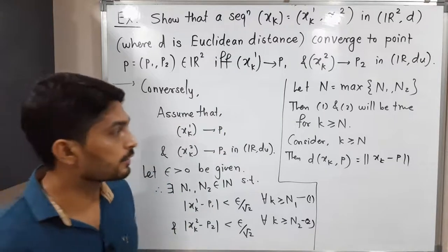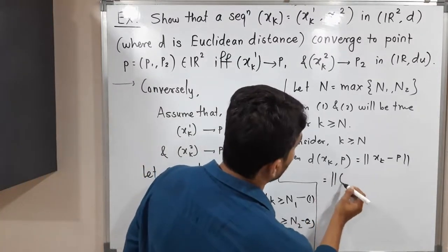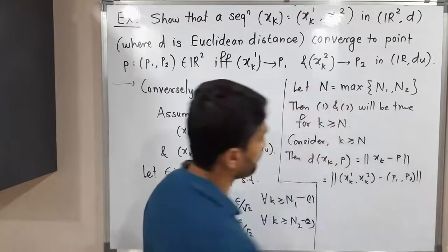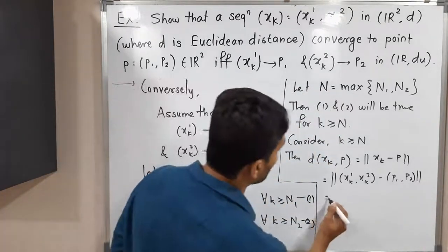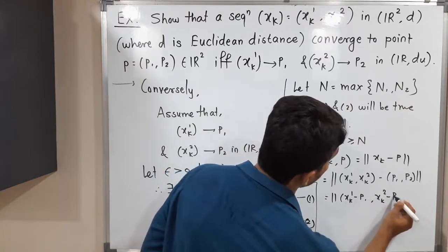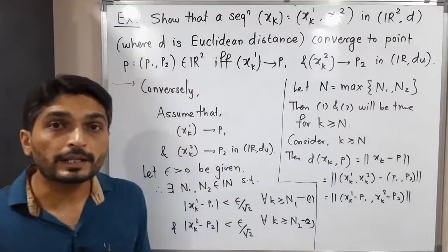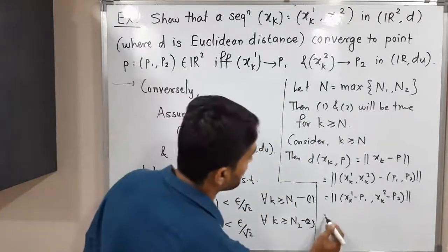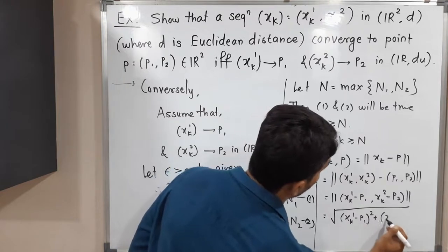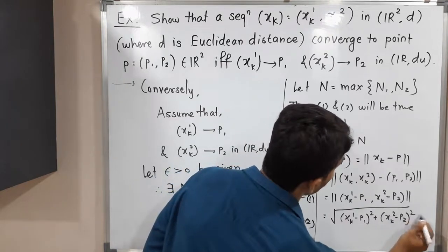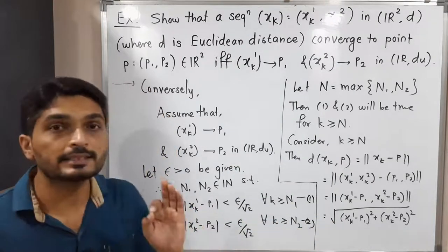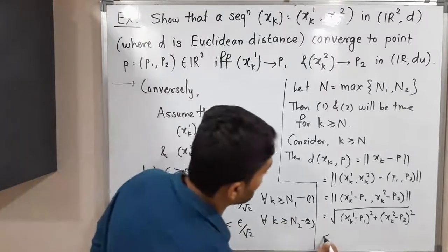The value of xk is (xk1, xk2) and p is (p1, p2). Doing the subtraction component by component, the norm of (xk1 - p1, xk2 - p2). By the definition of the norm, this equals the square root of (xk1 - p1)² plus (xk2 - p2)².